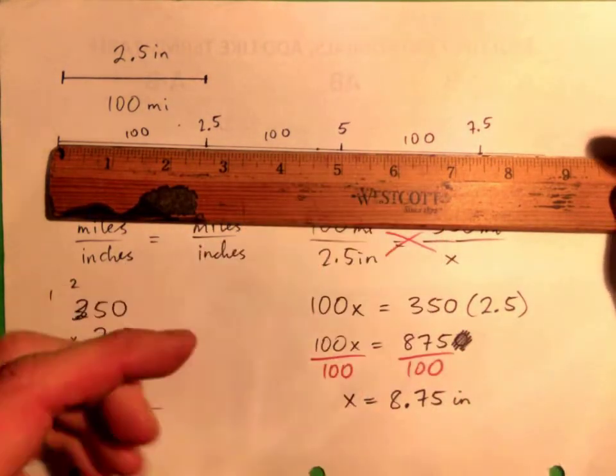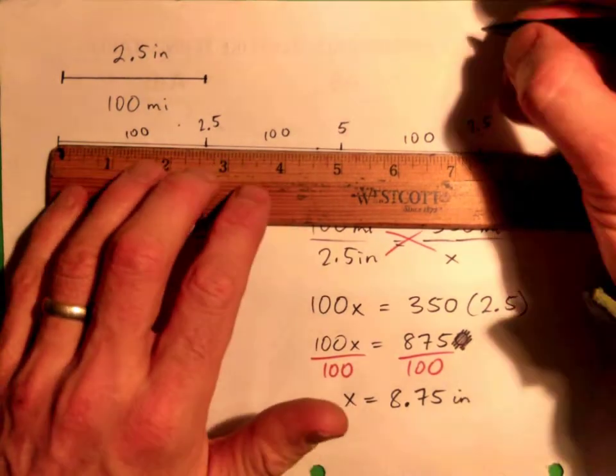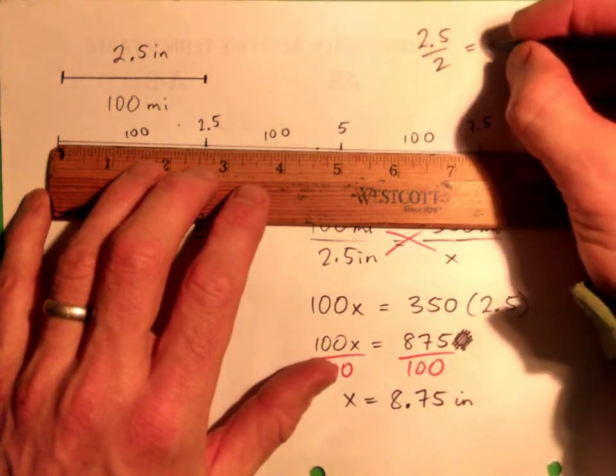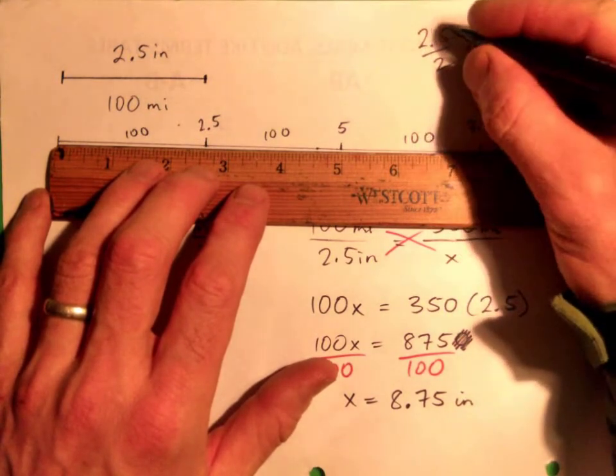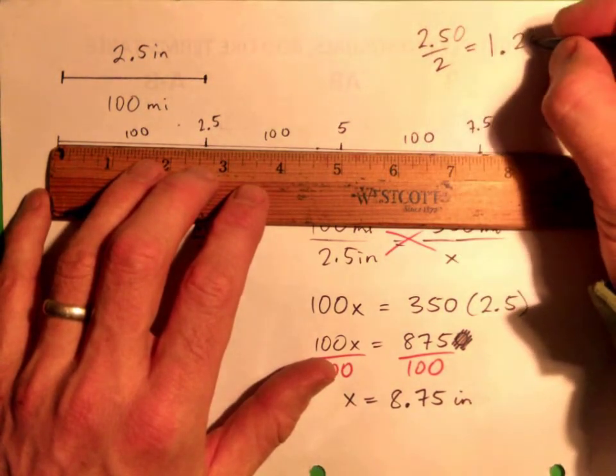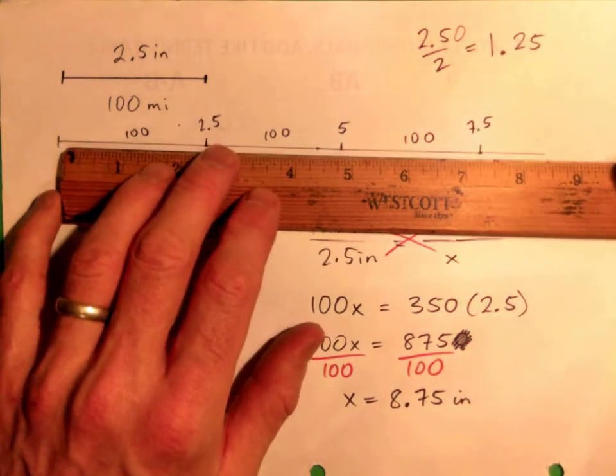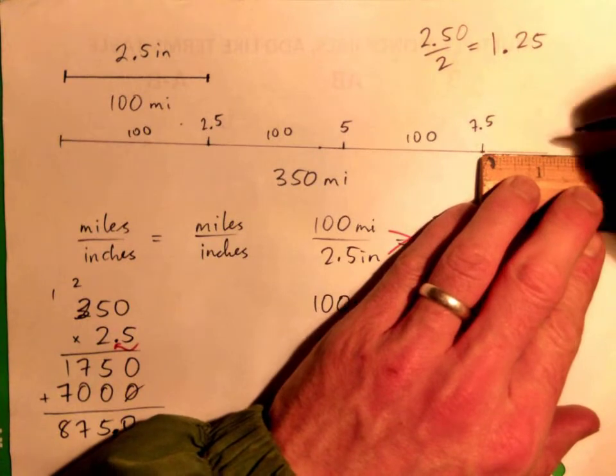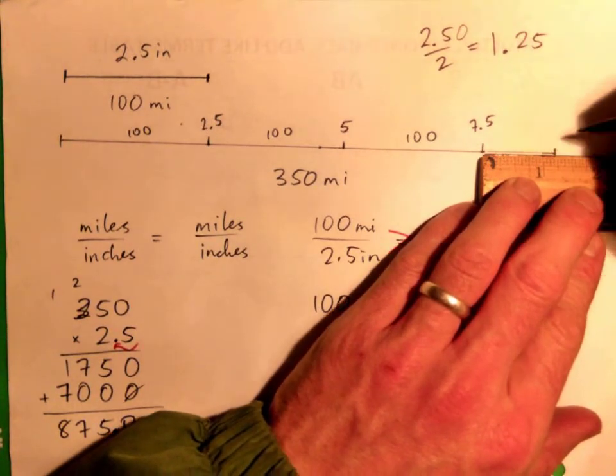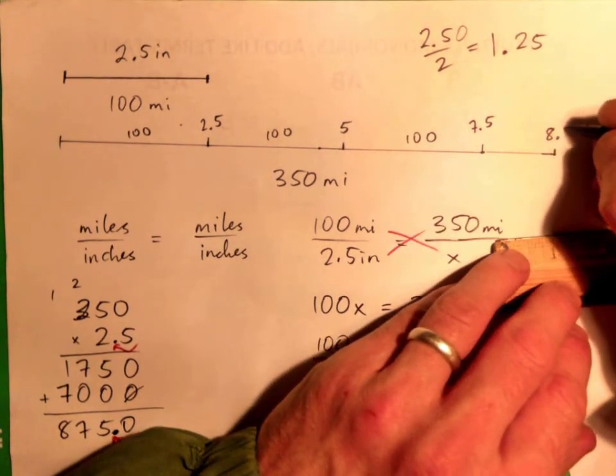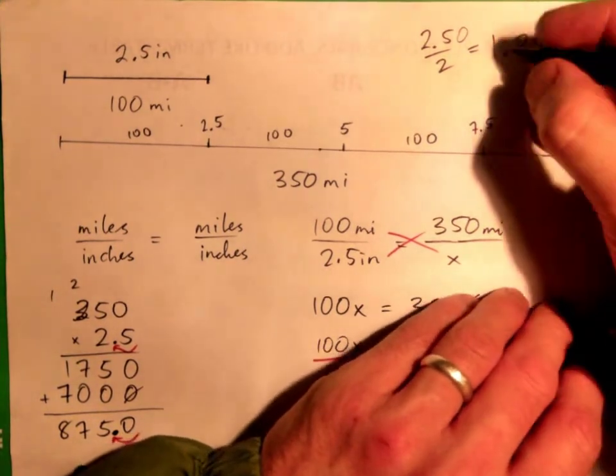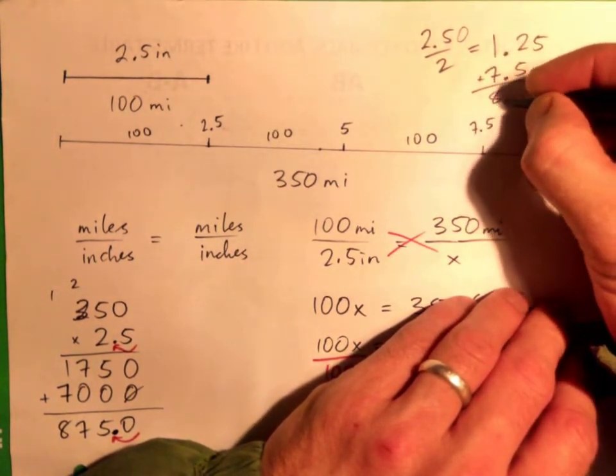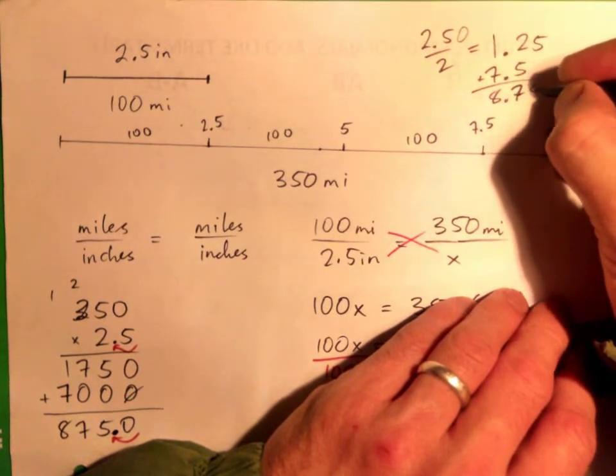And then 50 miles is like half of 2.5. You see, 2.5 over 2, 2 into 2 goes once, and 2 into 50 is 25. So it's that and 1.25 inches. So, in other words, 1 inch and a quarter, and that gets us to the 8.75. Because if you take the 1.25 and add 7.5, that's 8.75 inches.